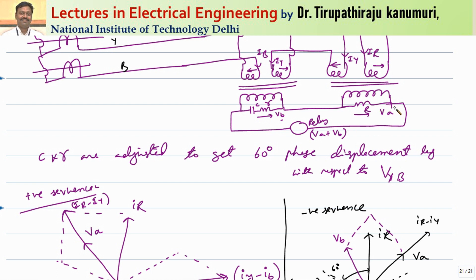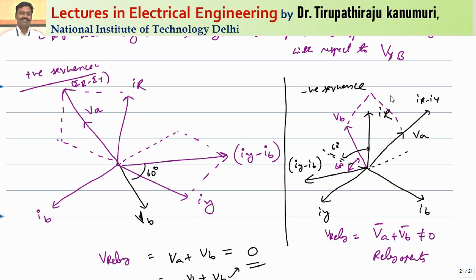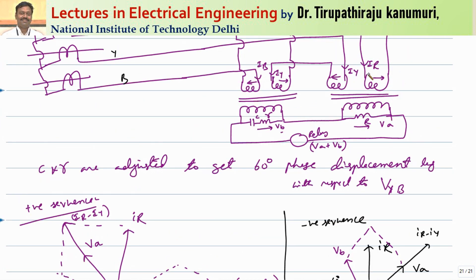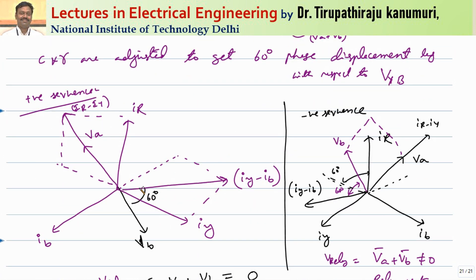VA is designed to be in phase with the corresponding voltage. For positive sequence currents IR, Iy, IB: the first transformer carries IR − Iy, and VA is in phase with IR − Iy. The second transformer carries Iy − IB, and by tuning, VB lags those currents by 60 degrees. This results in VA and VB being in opposite directions, so their vector sum equals zero — the relay does not operate for positive sequence currents.